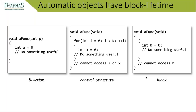Blocks can actually be standalone — they don't have to be associated with control structures. This can occasionally be used as a scoping mechanism. It's fairly unusual but perfectly legal in C. The program object b has been defined and scoped, and importantly when the block ends, the lifetime of that memory ends and the system reclaims it.